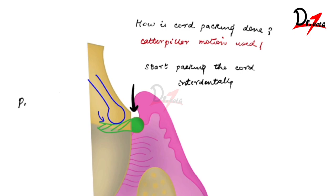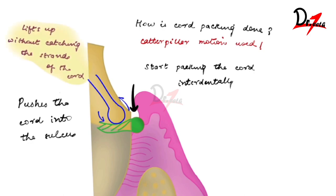So one side of the cord you will push the cord in with the help of the cord packer, and while you push, the other side lifts up without catching the strands of the cord. This is the caterpillar motion we were talking about.